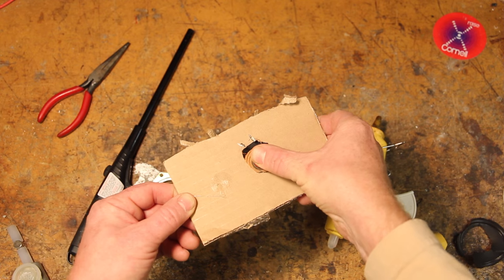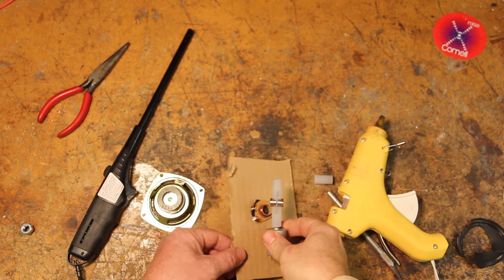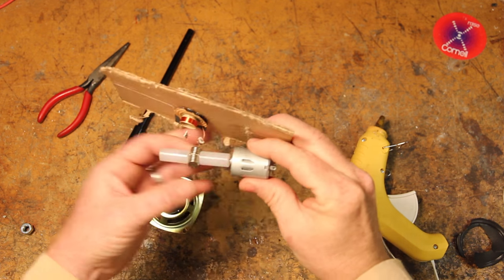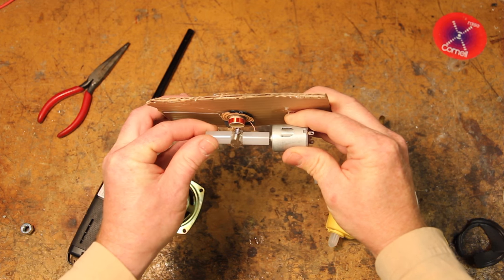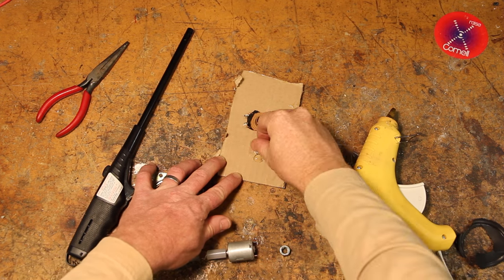The magnet is going to spin above this coil, so you're going to need to find a spacer that gives it the right clearance. I had two nuts lying around that were the perfect height.